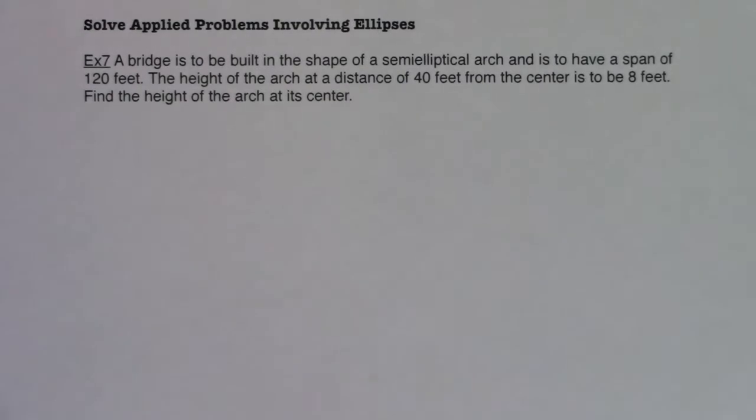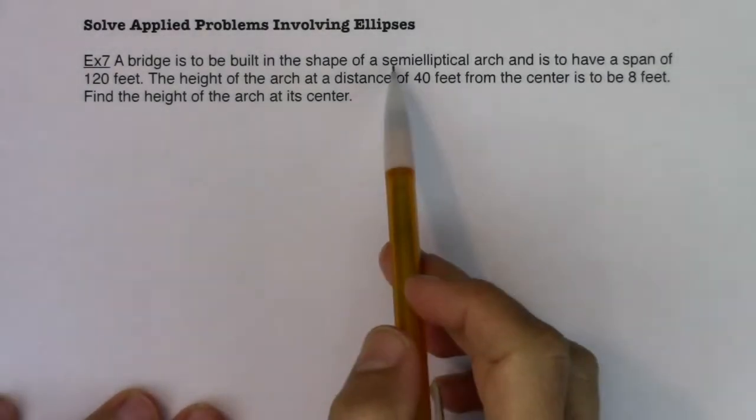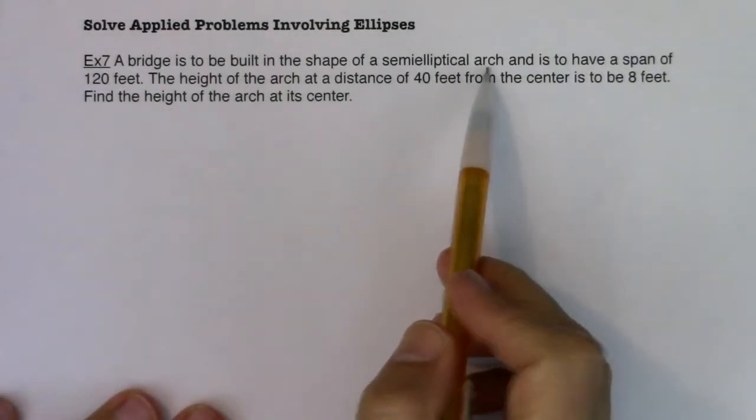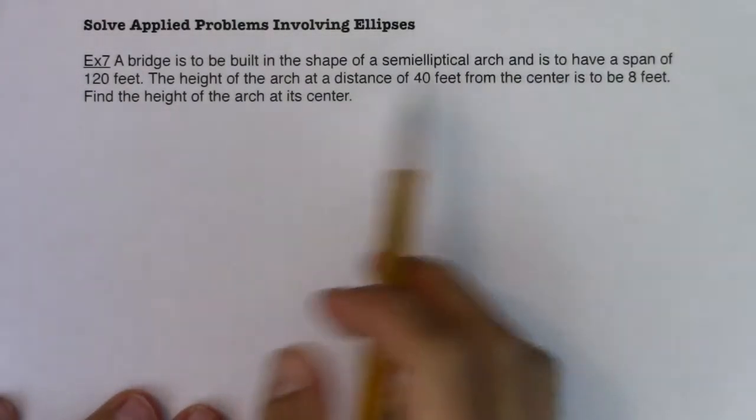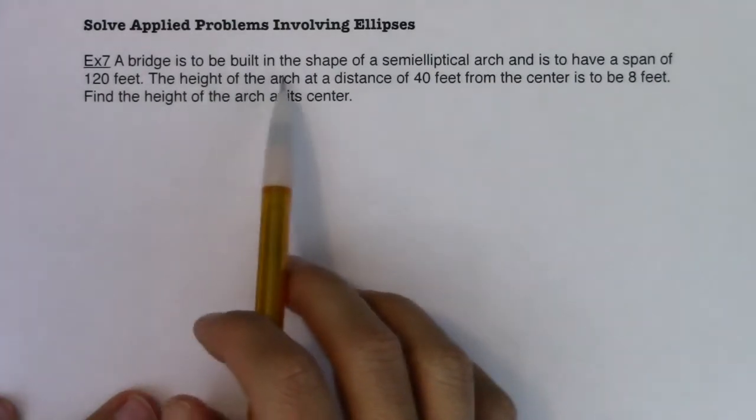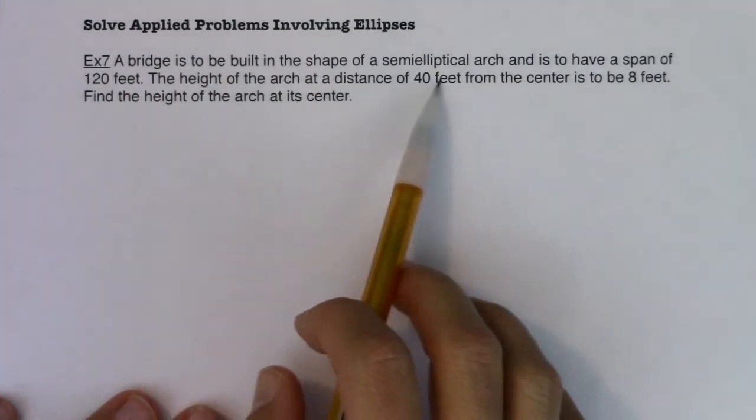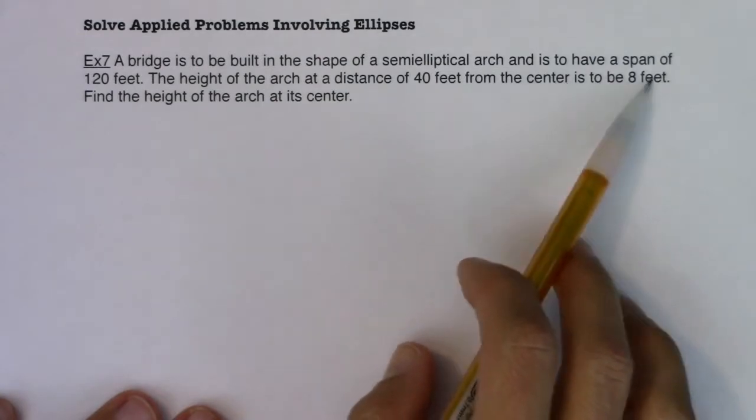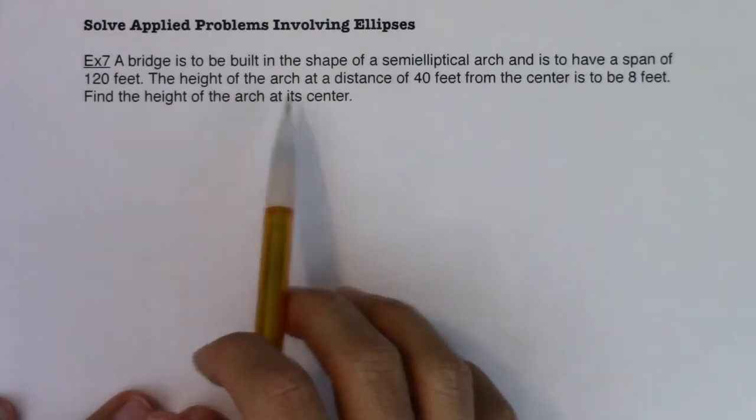Hey Math 31, welcome to our last example. We're here with example seven. It says a bridge is to be built in the shape of a semi-elliptical arch and is to have a span of a hundred and twenty feet. The height of the arch at a distance of forty feet from the center is to be eight feet. Find the height of the arch at its center.